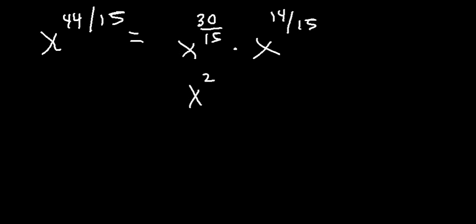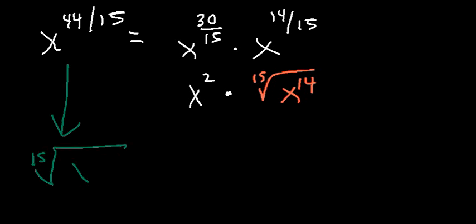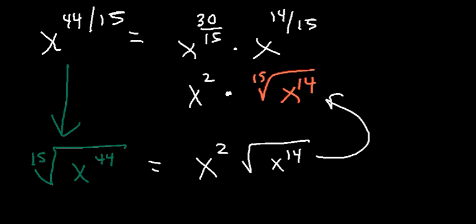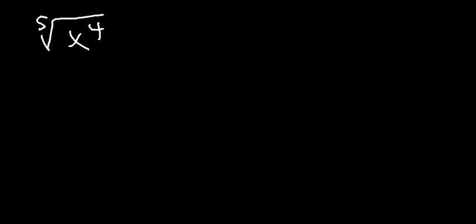Alternatively, convert back to radical form: x to the 44 over 15 is the 15th root of x to the 44th. 15 goes into 44 two times (15 times 2 is 30), with 44 minus 30 equals 14 remaining. So you get the same answer. Try: the 5th root of x to the 4th times the cube root of x to the 8th. This becomes x to the 4/5 times x to the 8/3. Get common denominators (multiply by 3/3 and 5/5): 12 over 15 plus 40 over 15, giving x to the 52 over 15, which is the 15th root of x to the 52nd.